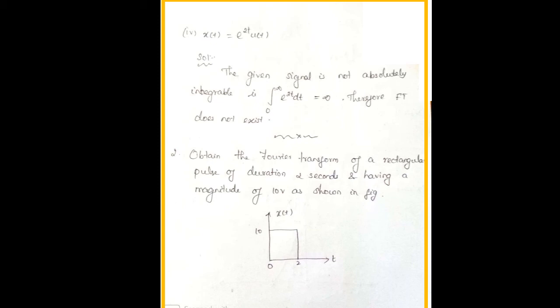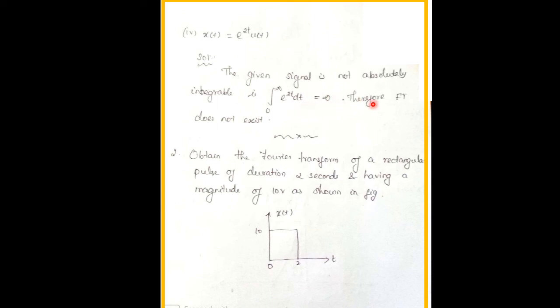Next problem: x(t) = e^(2t)u(t). Since u(t) is present, the integration limit changes to 0 to ∞. Integrating e^(2t) gives e^(2t)/2, and applying the limit yields e^(∞) = ∞. The integral equals infinity, so the Fourier transform does not exist for this signal.